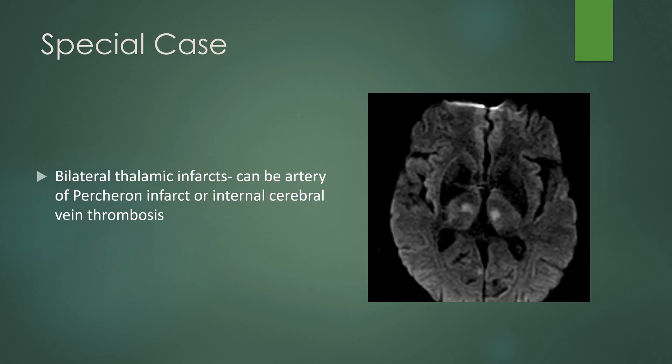Special case: if you have bilateral thalamic infarcts, this can be related to an infarct of the artery of Percheron, which is very difficult to see as it is very small. But don't always assume it's arterial — internal cerebral vein thrombosis can also present with venous infarcts of both thalami. Keep both in mind and always look at the internal cerebral veins when you see bilateral thalamic infarcts.